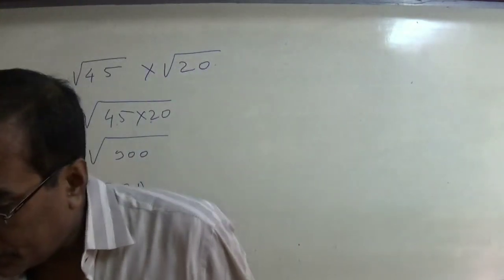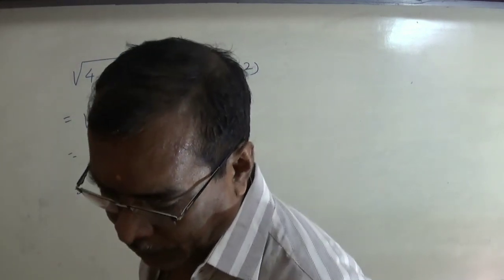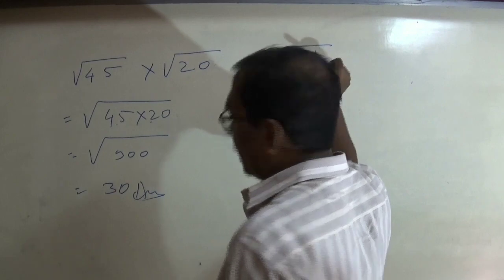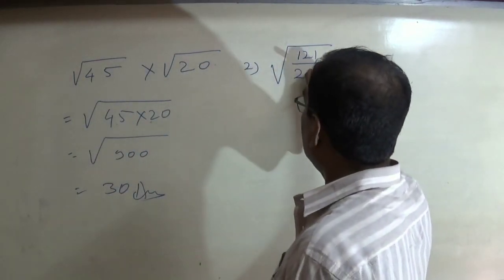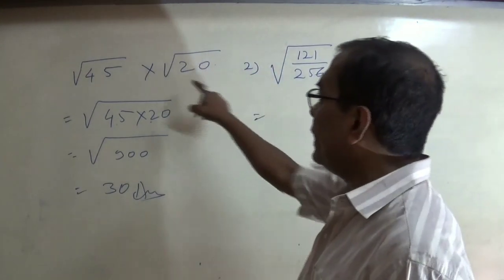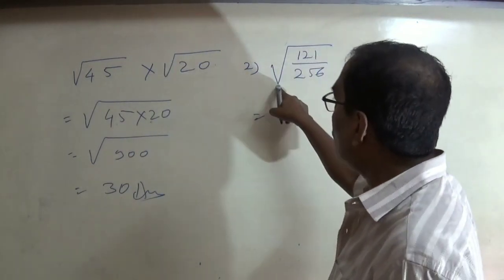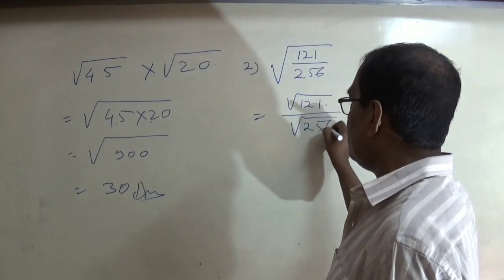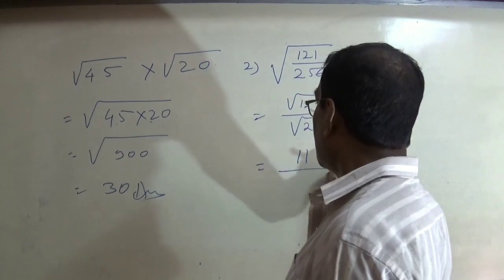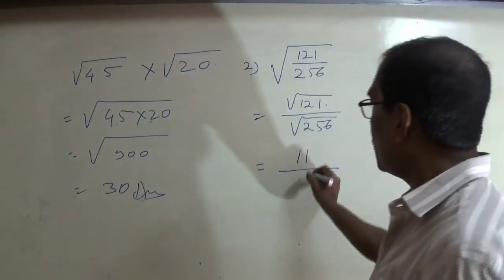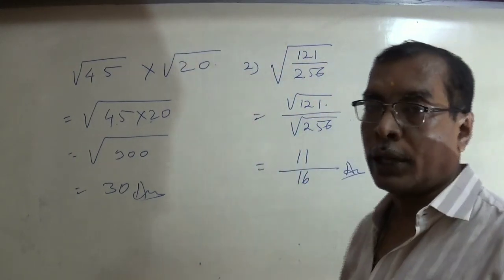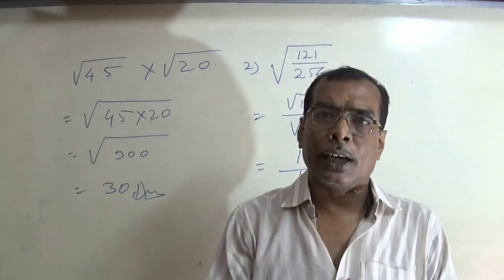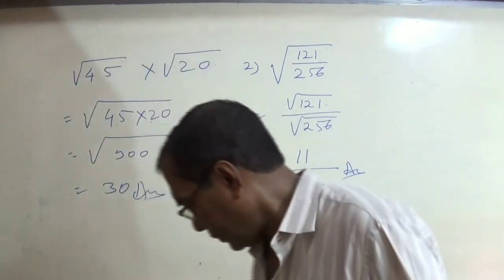The next question is square root of 1/256. Here, since a division sign is there, I am going to keep the numerator and denominator separately. The square root of 121 is 11, and the square root of 256 is 16. If you do not know the value of √256 or √121, you can find them by the long division method or by the prime factorization method.